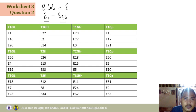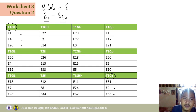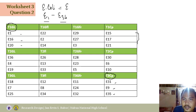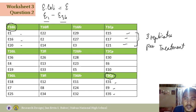Now assign all experimental units to specific treatments. For example, Treatment 1 for guava leaf randomly gets E1, E16, and E20. Treatment 3 for the positive control randomly gets E31, E9, and E35. This follows the principles of randomization and replication — there are 3 replicates per treatment, and they are randomly assigned.